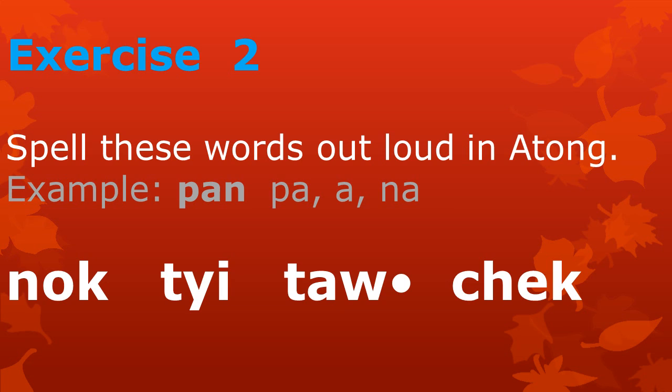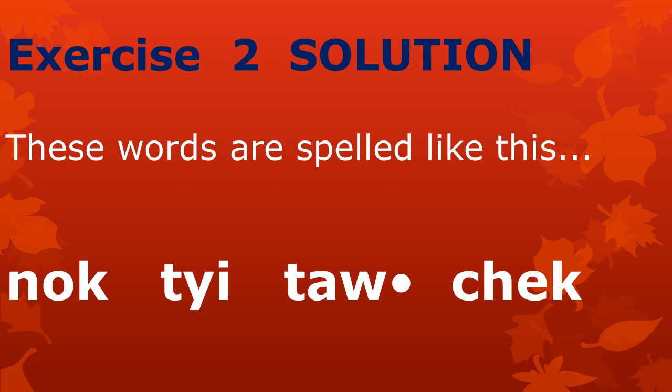Now let's use the names of the letters to spell some words. Spell these words in Atong out loud. For example, the word Ban is spelled Ba-A-Na. Ban. Now you try. You have 20 seconds. Here are the solutions. The words are spelled like this.